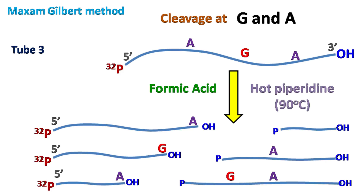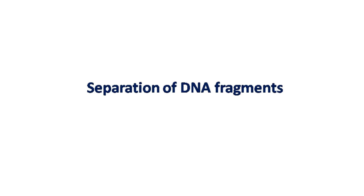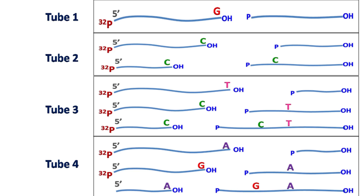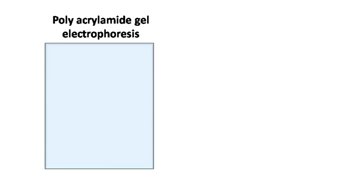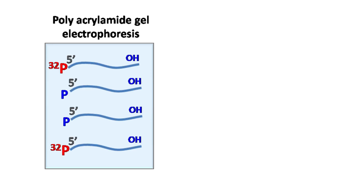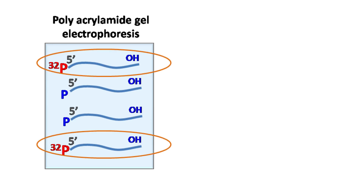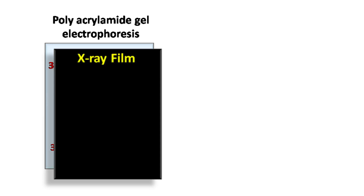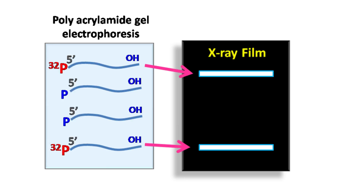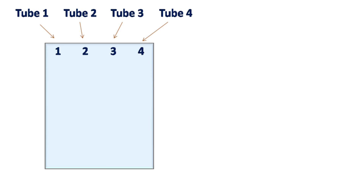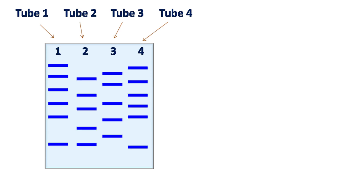Once the DNA is cleaved at specific residues, the fragments are separated using high-resolution polyacrylamide gel electrophoresis. The gel separates all fragments in the reaction mixture; however, we are only interested in fragments carrying the radiolabel P32. The gel is therefore exposed to an X-ray film to perform autoradiography, which detects only the radioactive P32-labeled fragments. Electrophoresis is carried out for samples from each tube side by side.